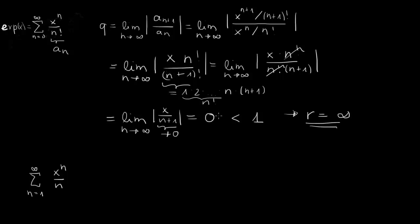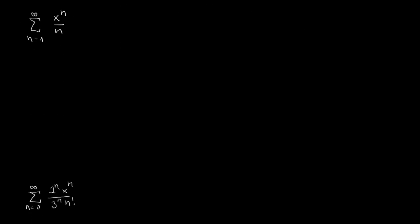A key remark: whenever you get something not depending on x that is always smaller than 1, you have an infinite radius of convergence. If you have something always larger than 1 and not depending on x, your radius of convergence is actually zero.